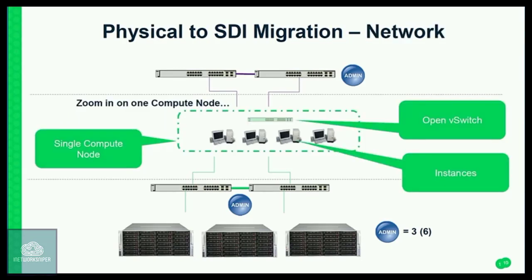The next step in the process was really building out software-defined infrastructure for storage. You can see we have a similar set of switches at the top for clients coming in, and we're starting to use a set of generic switches on the back end doing iSCSI storage instead of a particular vendor's proprietary storage from the first stage of migration. After that, we've done the first two legs of the stool and now we're going to really focus on networking. We replaced that physical switch with an open switch — a software switch — Open vSwitch.